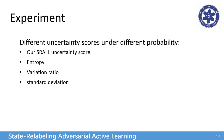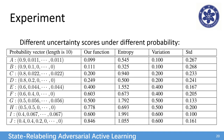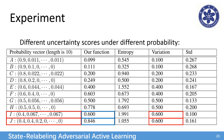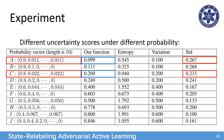We compare our uncertainty function with three popular uncertainty scores: entropy, variation ratio, and standard deviation. From the results, we can observe that for entropy, the uncertainty score at the last two lines is illogical, and so is variation ratio. But our function can provide a reasonable uncertainty score, and at the first and third lines, our function is also more suitable than the standard deviation score.